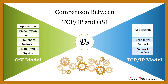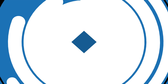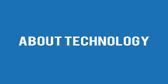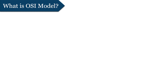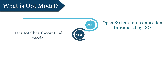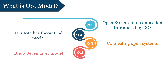Initially, we'll discuss both of the models in detail and then we'll discuss the differences between them. OSI stands for Open System Interconnection model, that was introduced by ISO, that is International Standard Organization, in the late 1970s. One of the most important things about this model is that it is totally a theoretical model that facilitates communication between different open systems.